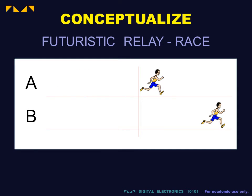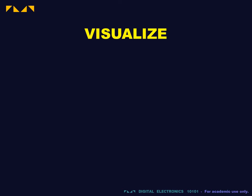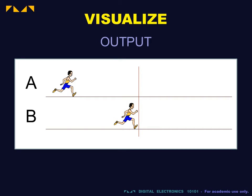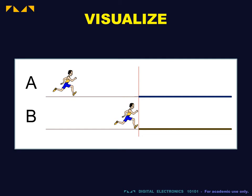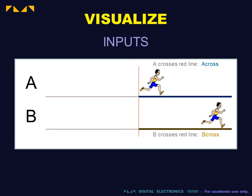We are commissioned to design a digital system that flags an illegal or bad handoff. The visualization phase consists of determining the inputs and outputs, and then connecting these using the necessary logic. In our case, the output is the occurrence of a bad handoff that can be indicated by a light or buzzer. We will call this output bad HO. The two inputs can be triggered by a pressure switch embedded in the track that determines whether or not runners A and B respectively have crossed the red line. These inputs will be called A cross and B cross respectively.